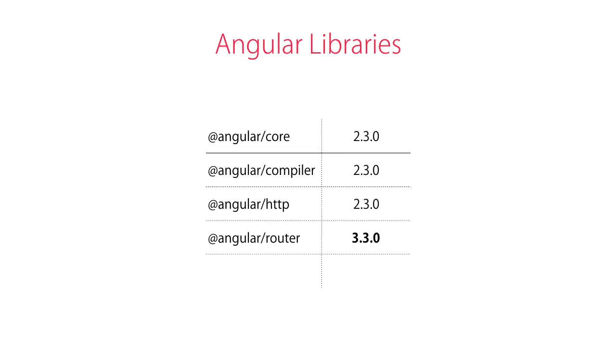But unlike Angular 2, Angular 4 was not a new framework with a lot of breaking changes. In fact, it wasn't even a major upgrade. Angular consists of a few different libraries that are distributed as separate node packages via NPM.